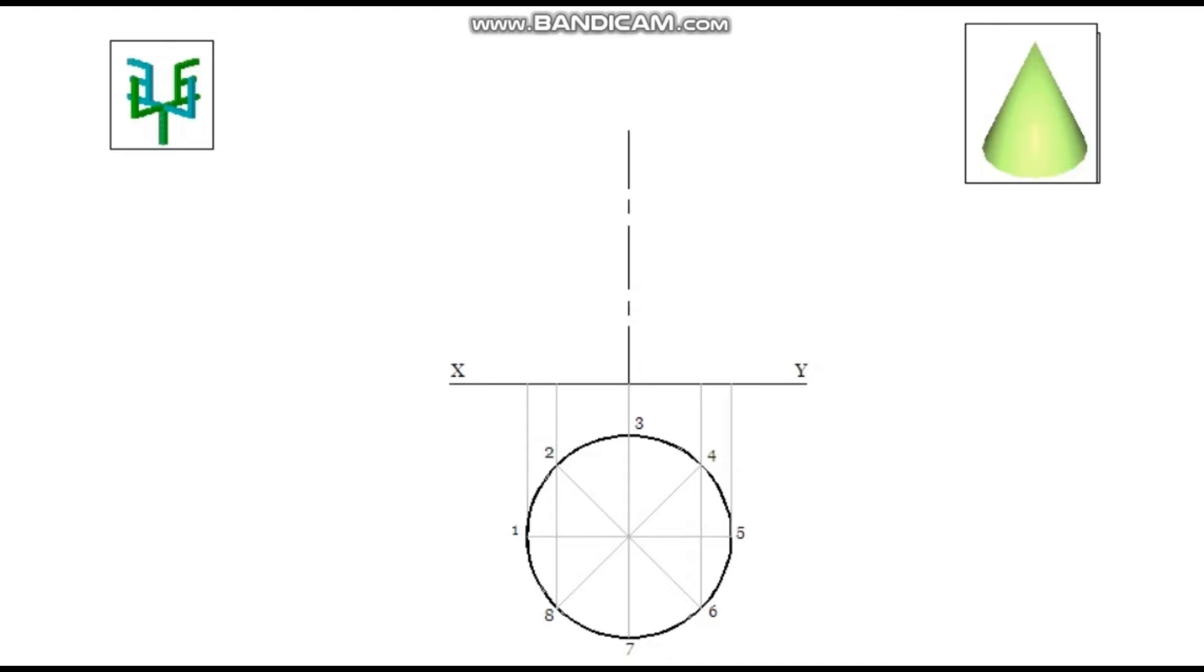Draw a vertical axis line and mark height of the cone on this axis line. Join all the projectors to the top. This top point is called apex point or vertex point of the cone.